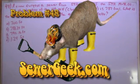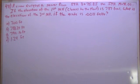Question number 48, wastewater collection study guide from SewerGeek.com. A crew surveys the sewer from station 8 plus 75.25 to station 19 plus 98.0. If the elevation of the first manhole closest to the treatment plant is 787 feet, what is